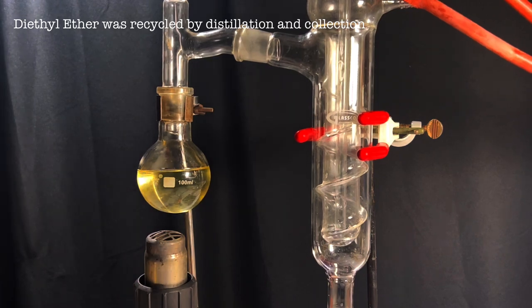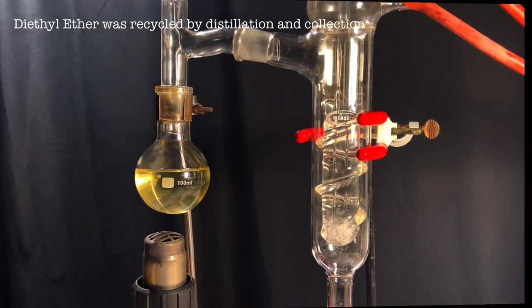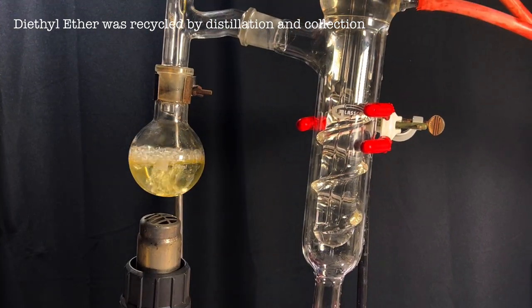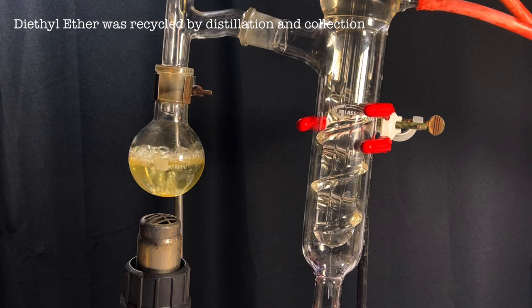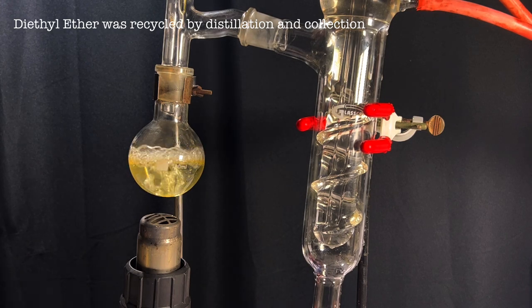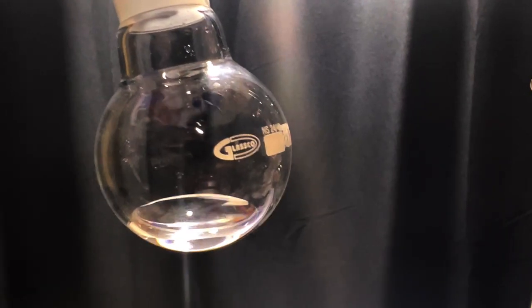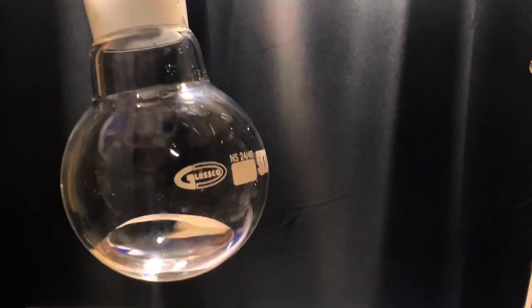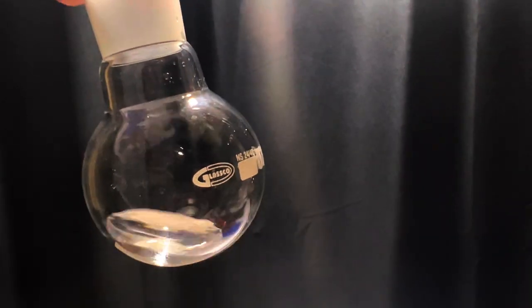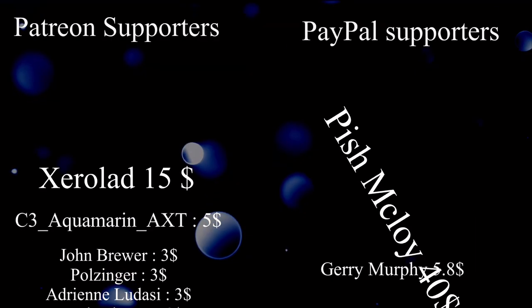In this process all the diethyl ether was recycled. Finally the product n-butyl benzene was collected at 184 degrees Celsius. The product is clear but a little bit greasy in appearance. I got 3 grams of the product which is less than the amount mentioned in Vogel's, that is 4.8 grams.